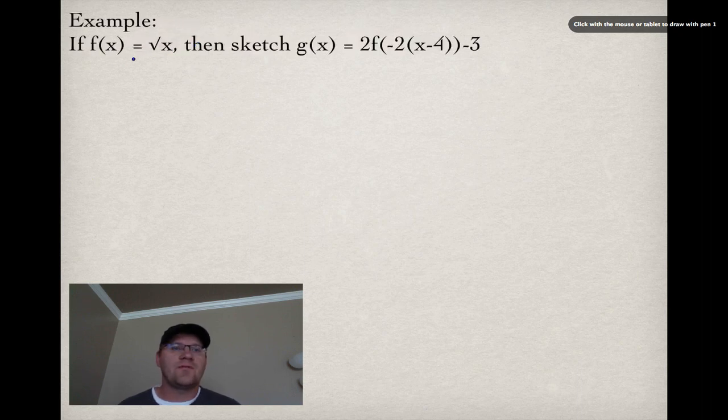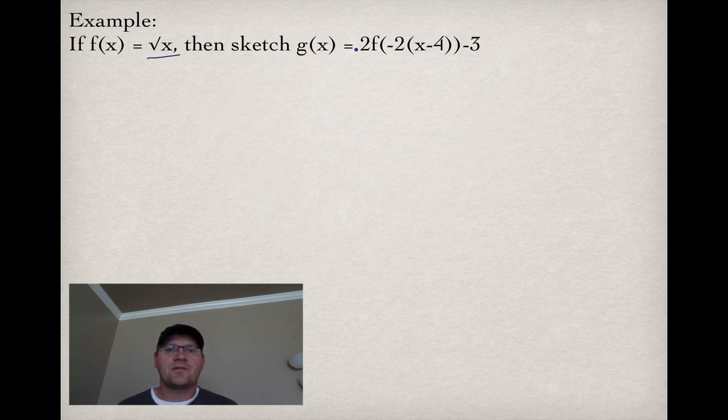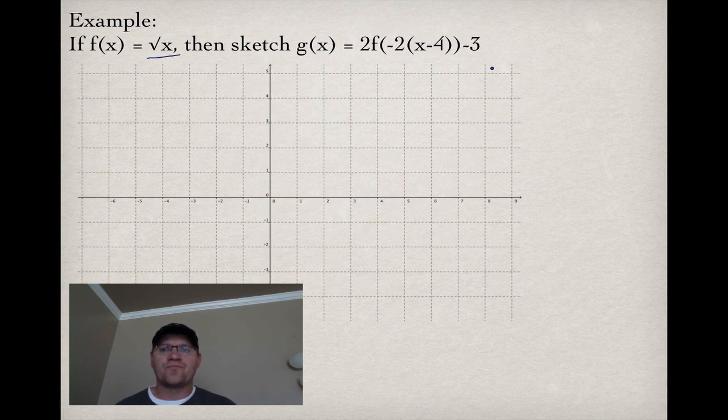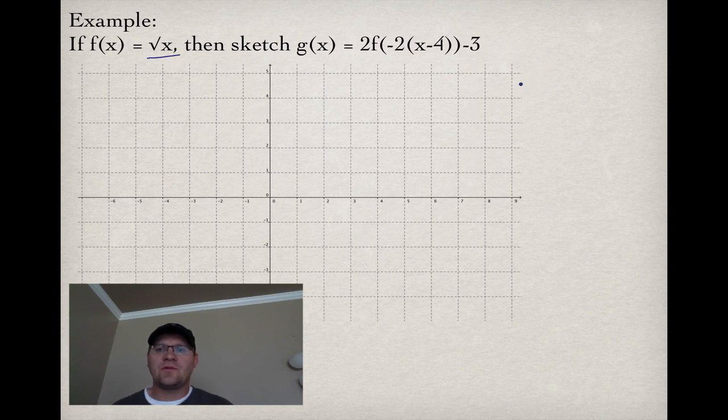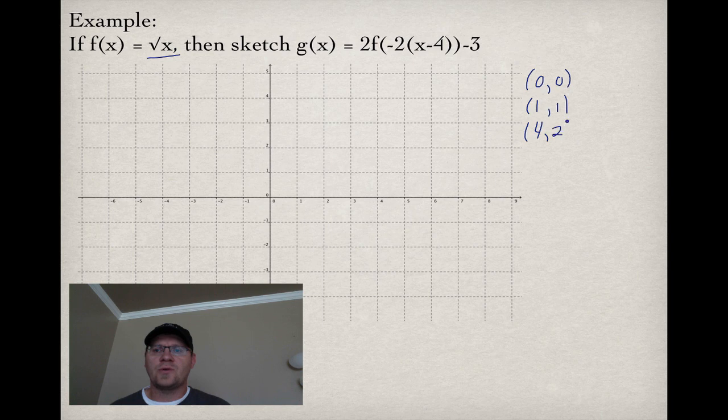So our final example is, if f(x) equals root x, then sketch the graph of g(x), which equals 2f(negative 2 times x minus 4) minus 3. When we're sketching these sorts of things, it's always nice to just know the main points of the original graph. Our main points are (0,0), (1,1), (4,2), and (9,3).